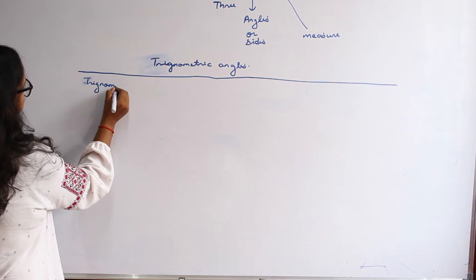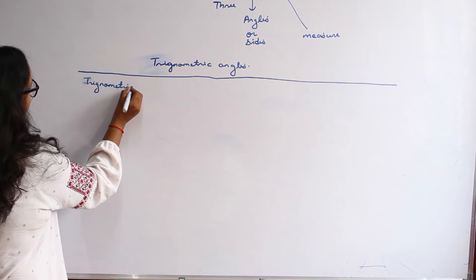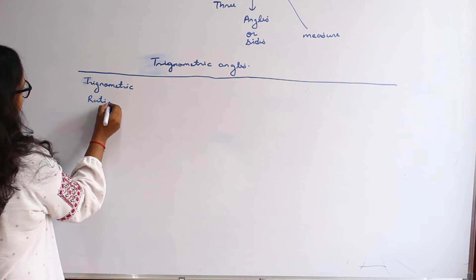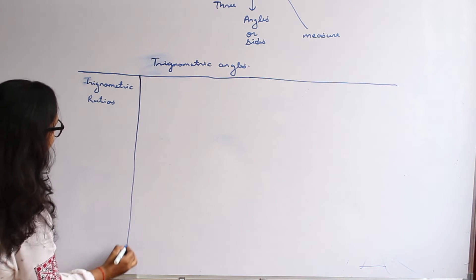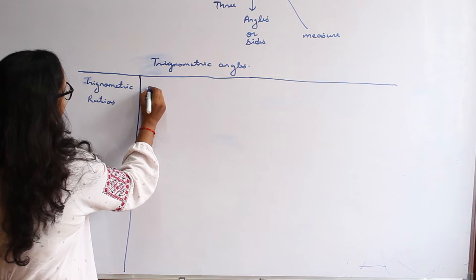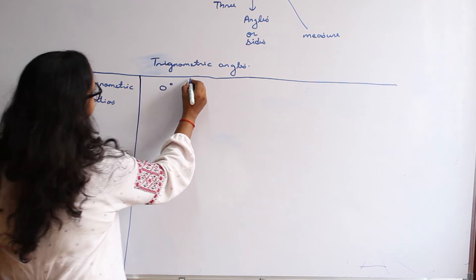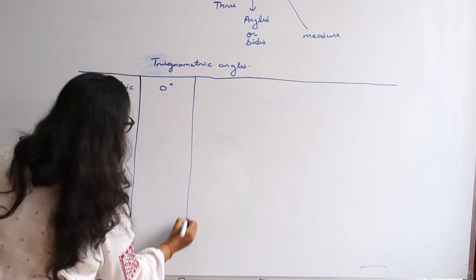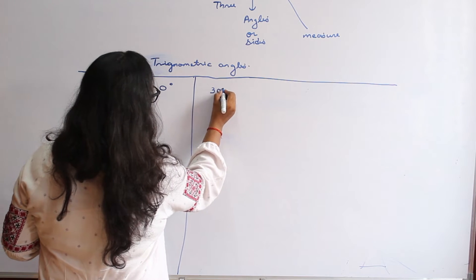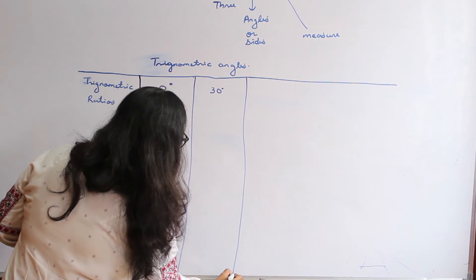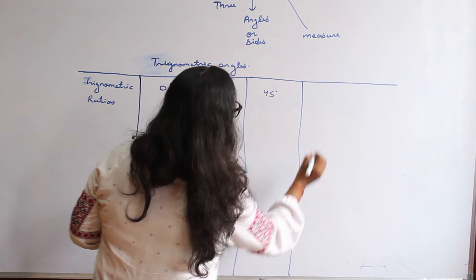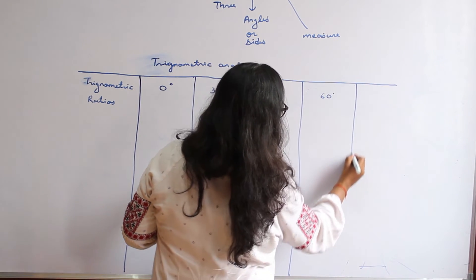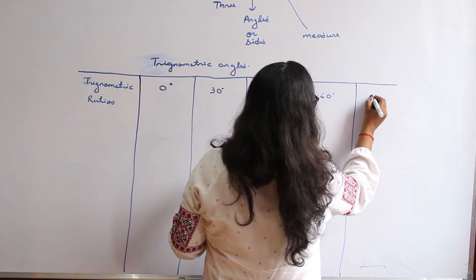In the trigonometric angles table, we have the trigonometric ratios listed against the angles: 0 degrees, 30 degrees, 45 degrees, 60 degrees, and 90 degrees.